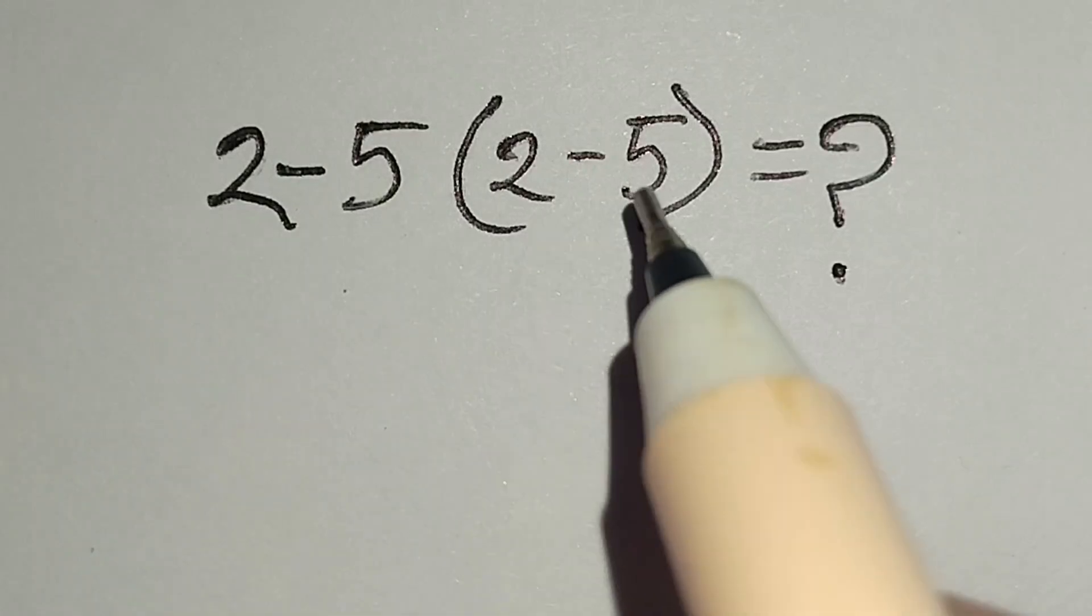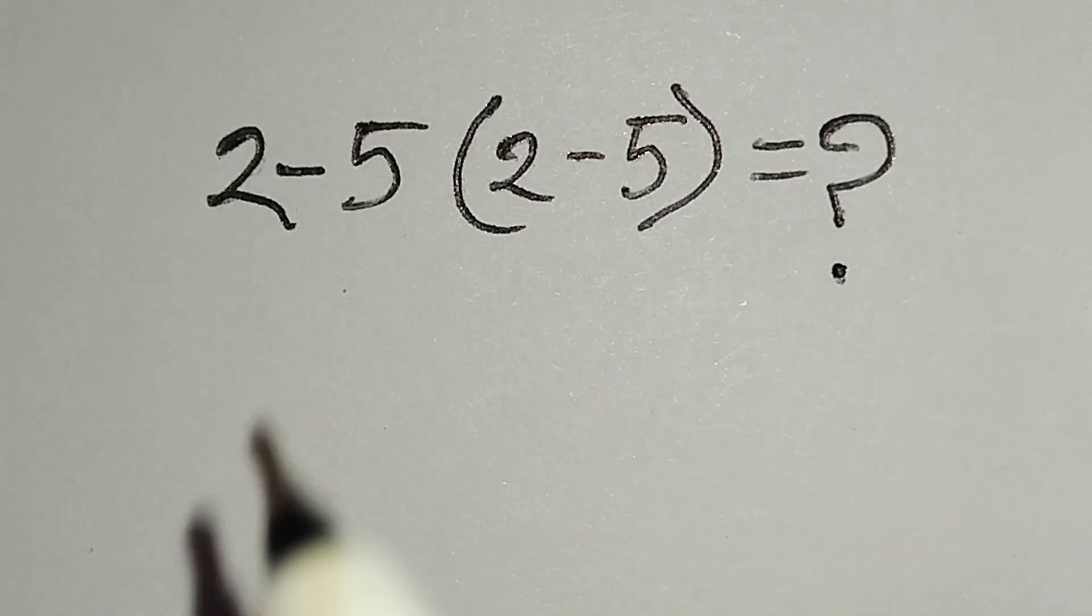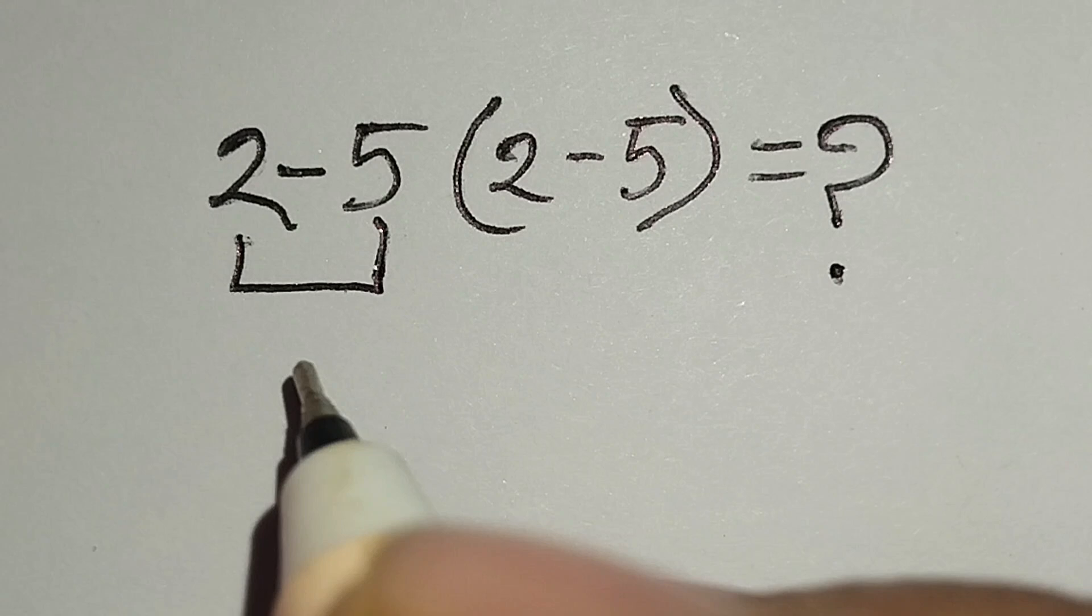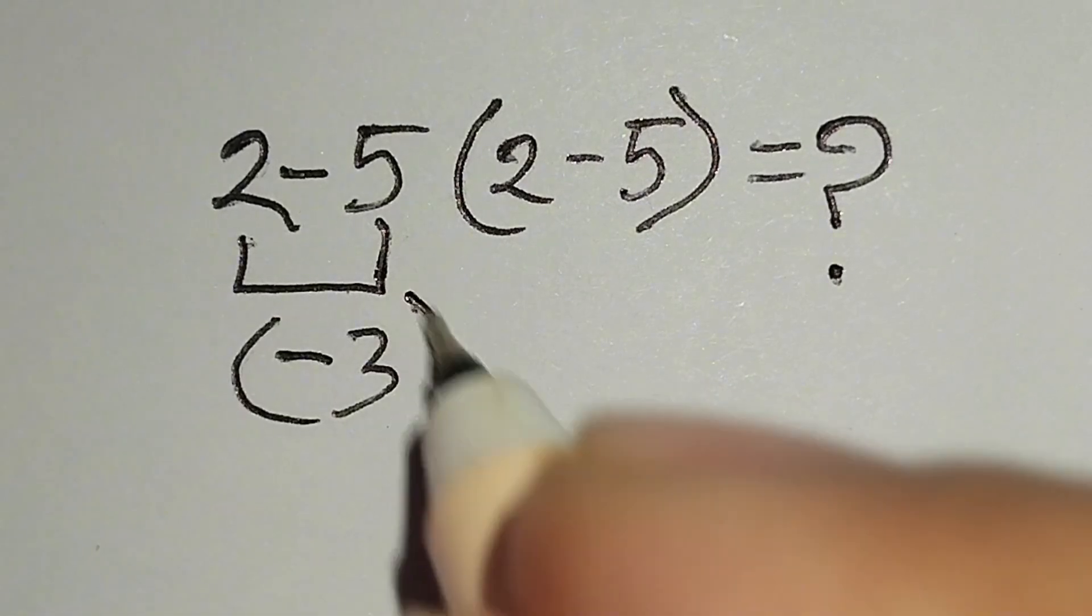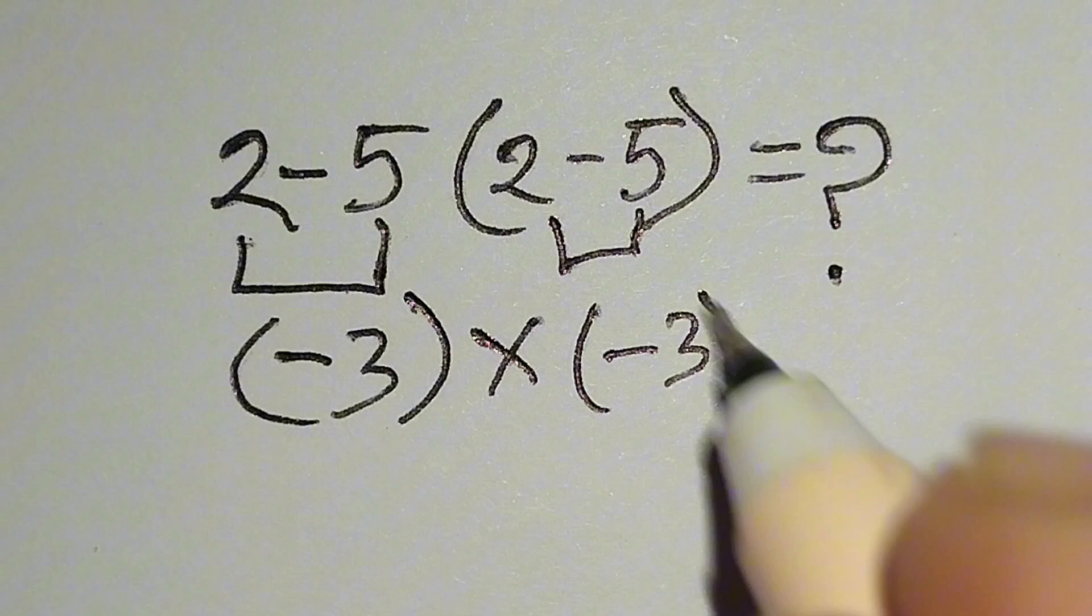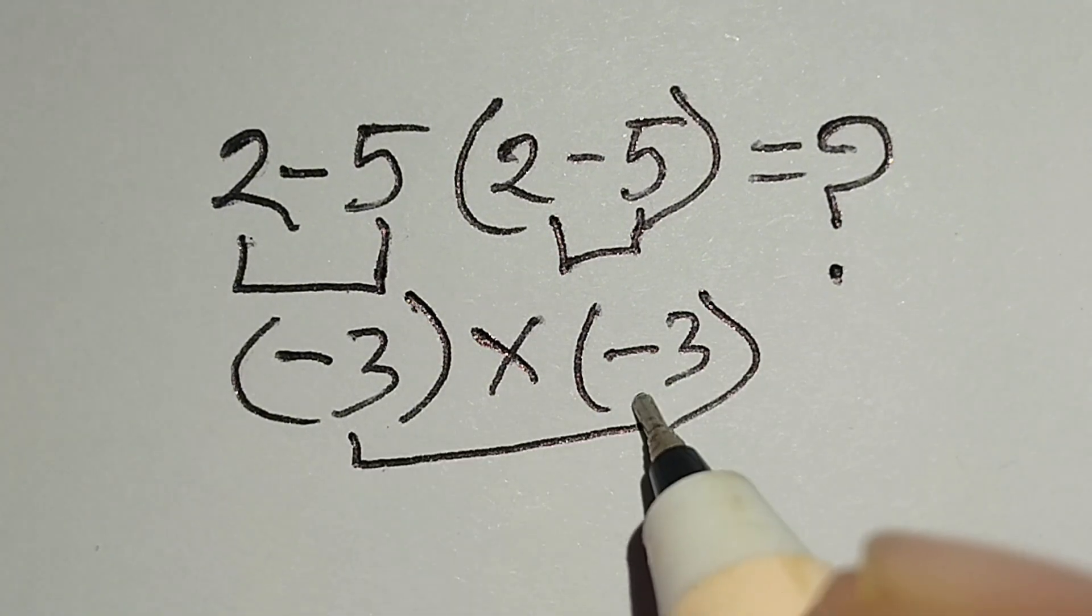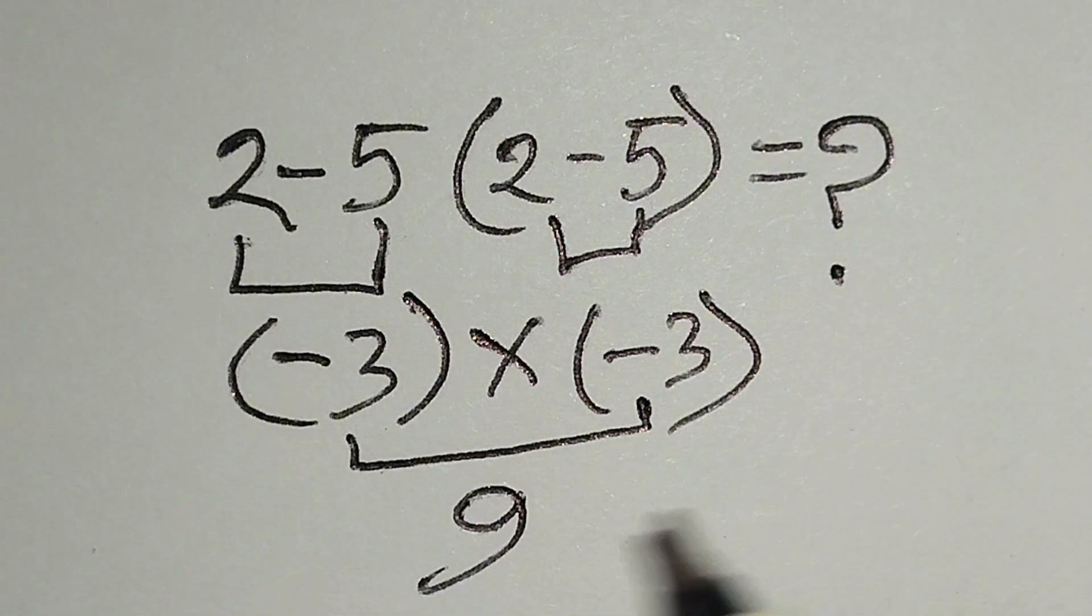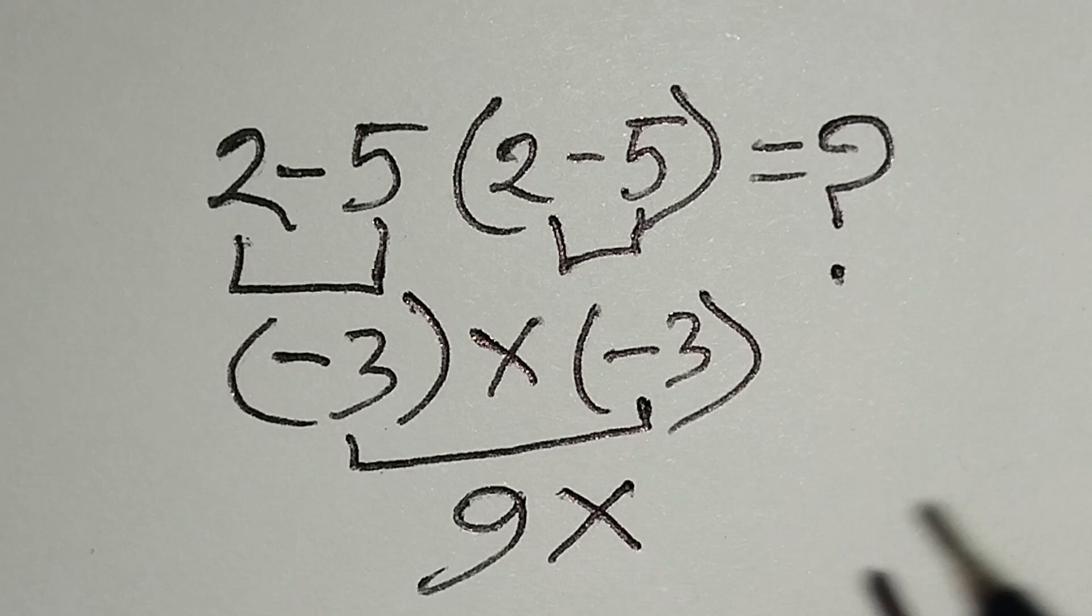2 minus 5 bracket 2 minus 5 equals what? Here, 2 minus 5 gives us negative 3. Multiply: 2 minus 5 gives us negative 3. Negative 3 times negative 3 gives us positive 9. But this answer is not correct.